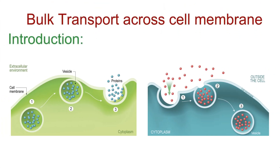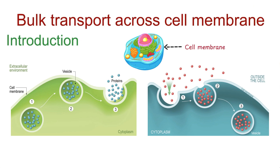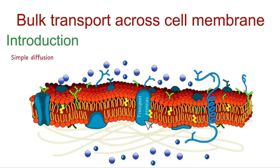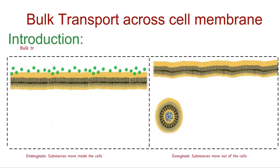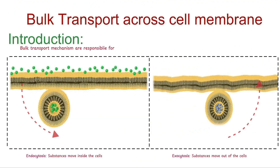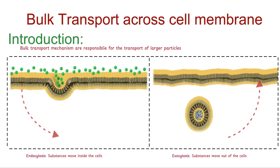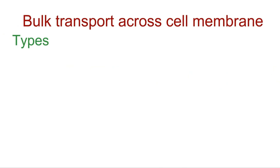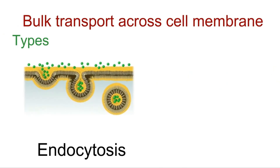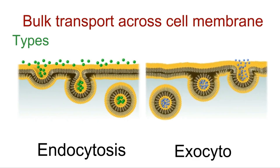Bulk transport is a fundamental process that allows cells to move large quantities of materials across their cell membranes. Unlike simple diffusion or facilitated diffusion, which involve the movement of small molecules across the lipid bilayer, bulk transport mechanisms are responsible for the transportation of larger particles or significant amounts of substances. There are two primary types of bulk transport across the cell membranes: endocytosis and exocytosis.